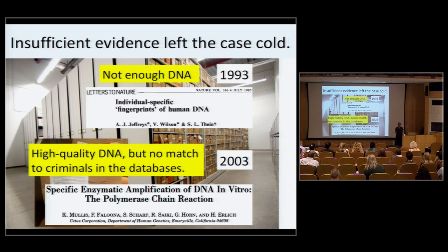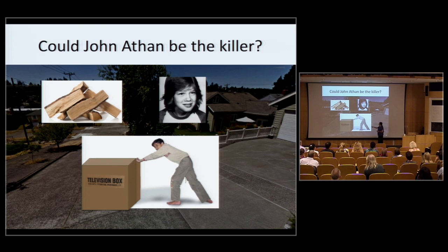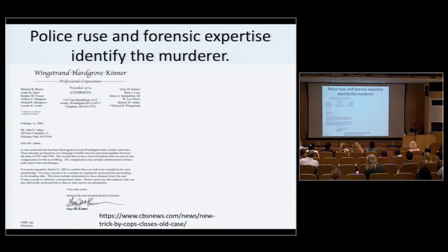Sure enough, the forensic scientists were able to get really high-quality DNA. But when they submitted their samples to the FBI's database — a database that includes information only from convicted criminals — they did not find a match. Nevertheless, the police kept evaluating things, and over and over again one particular name kept popping up: John Athan, who at that time had been a 14-year-old neighbor boy seen pushing a large cardboard box down the hill. He claimed he had been stealing firewood. At that time, he was already a 37-year-old adult living in New Jersey, and the Seattle Police Department did not have the money to go get a DNA sample.